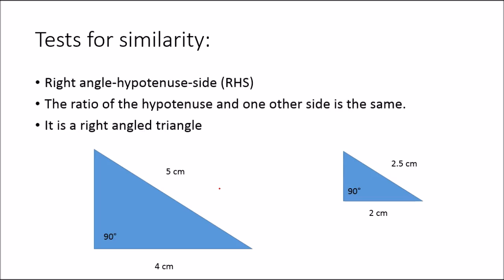And a special case of this is for right angle triangles. So right angle-hypotenuse-side. So the ratio of the hypotenuse and one other side is constant, and they are both right angle triangles. So they both have that 90 degree angle in them.